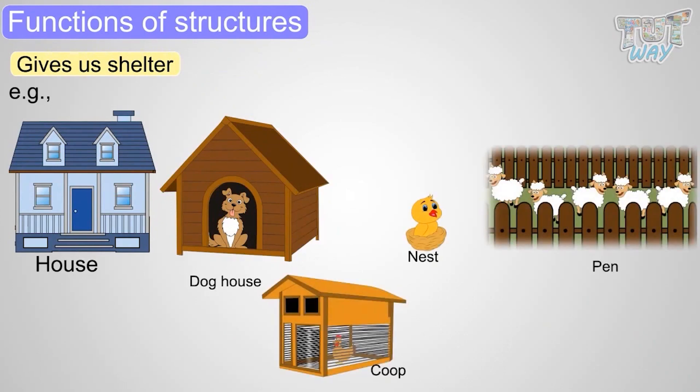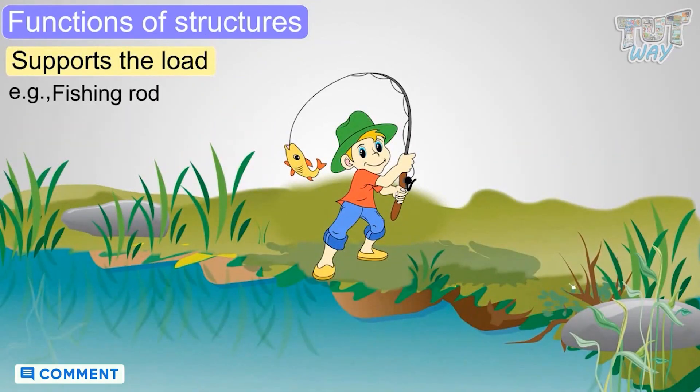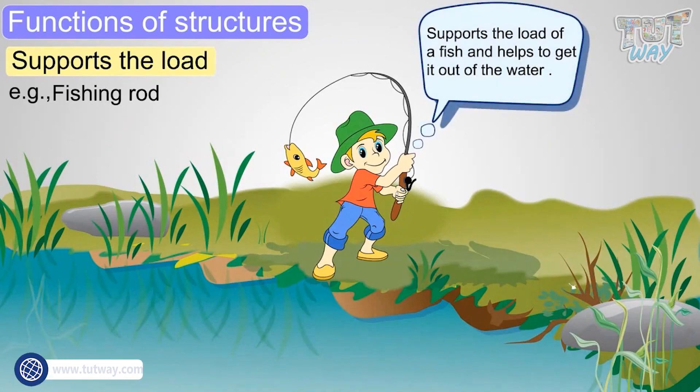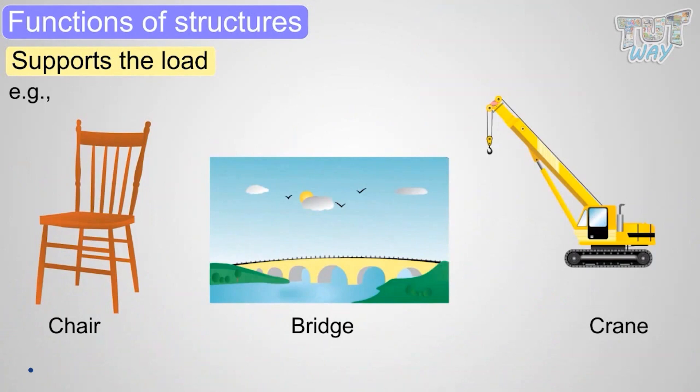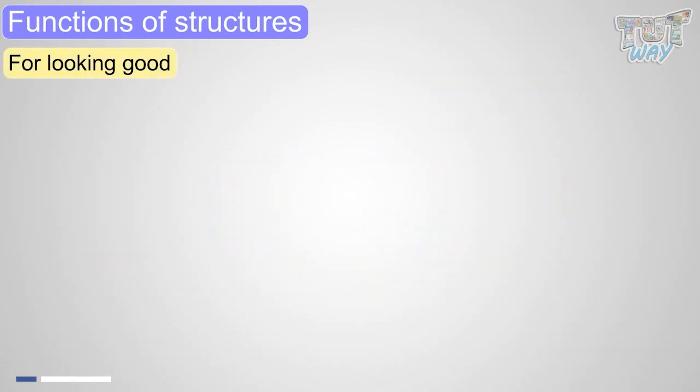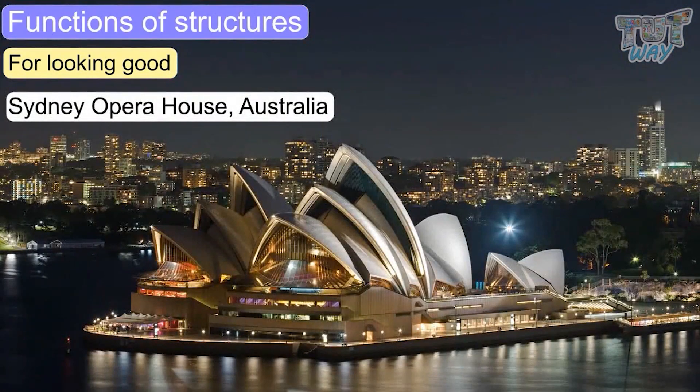Structures also help to support a load. Like fishing rod is a structure that helps to support the load of a fish. Chair, bridge, crane. All are examples of structures that help to support a load. Structures are also made of aesthetic value or looking good. Like CN Tower, Canada. Sydney Opera House, Australia.